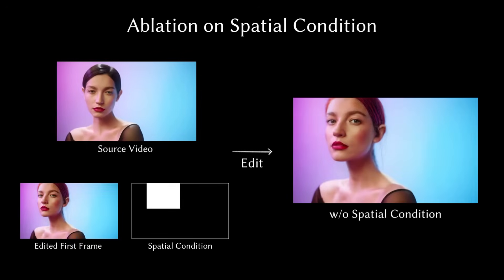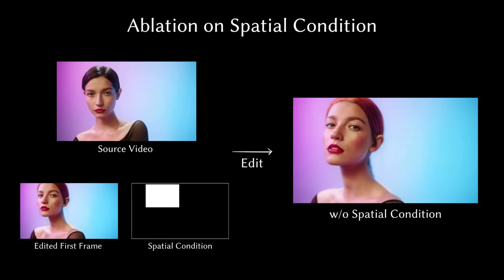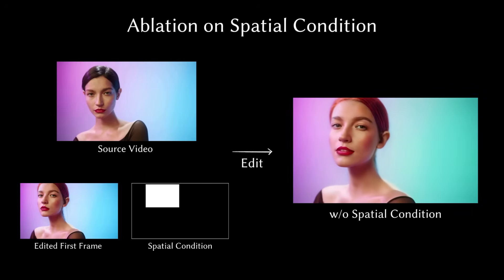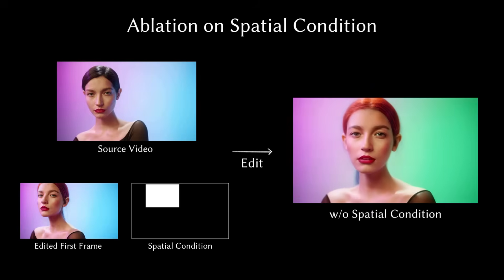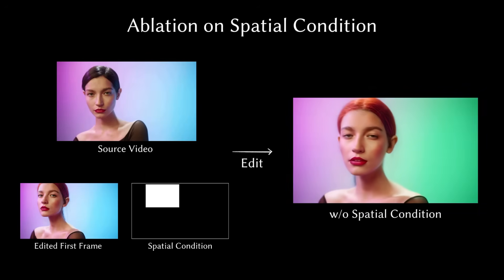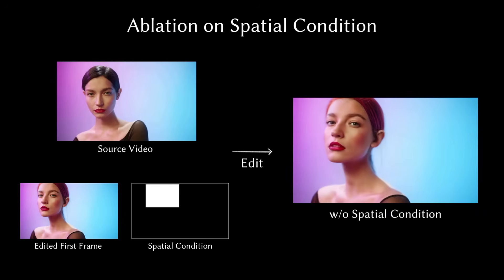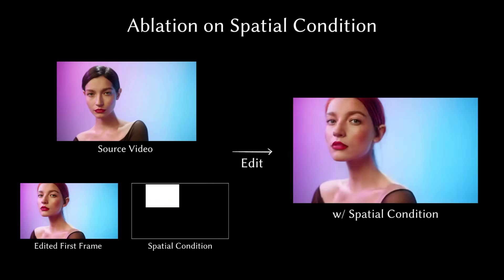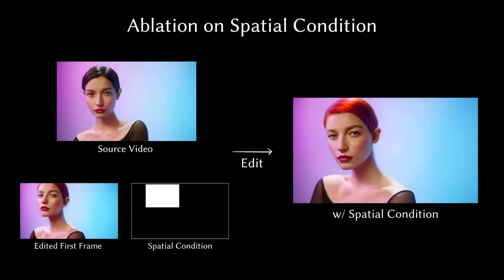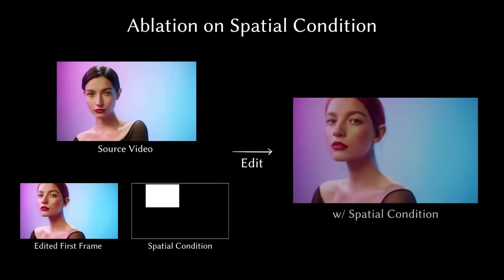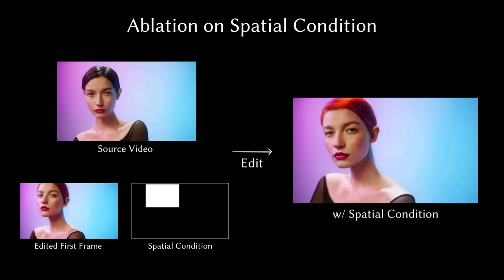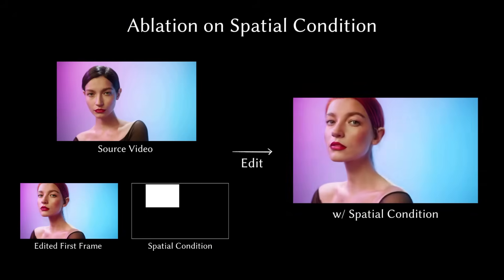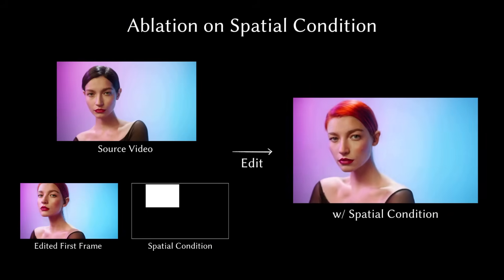Now let's look at this ablation study. See this video on the right, generated without the spatial condition? The hair color bleeds everywhere and the background gets all messed up. But the video below it, with the spatial condition? Perfect! It proves how the AI can lock onto a specific area and keep the edit clean.